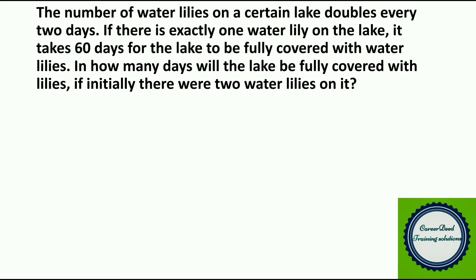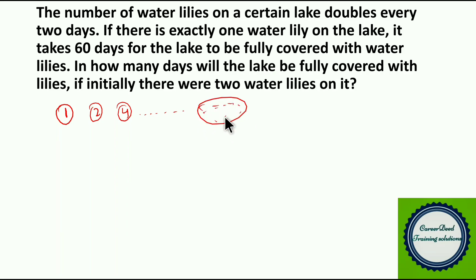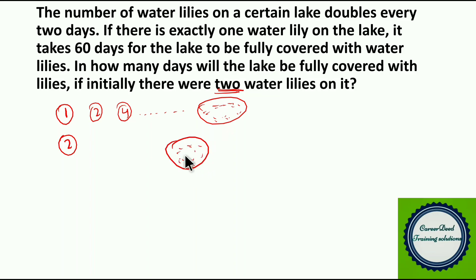Moving to question number 20. The number of water lilies on a certain lake doubles every 2 days. If there is exactly 1 water lily on day 1, it takes 60 days for the lake to be fully covered. In how many days will the lake be fully covered if initially there were 2 water lilies? Think logically: starting with 2 lilies means you are already 1 doubling period ahead.